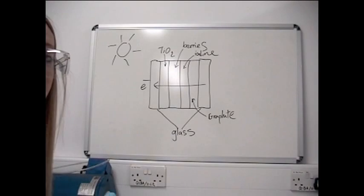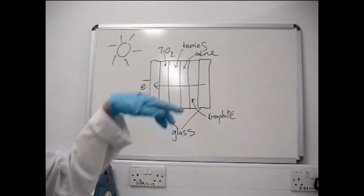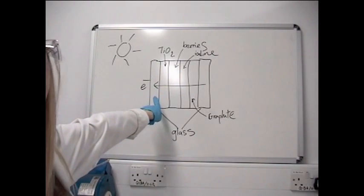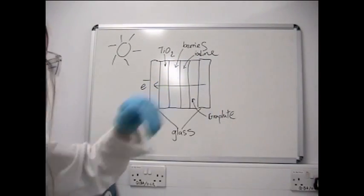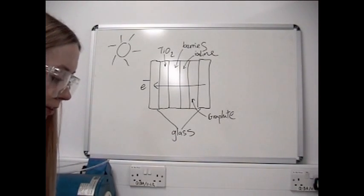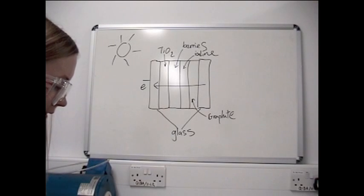So if we look back at our board, where we've shown what we're doing, we've now got this glass slide, we've got our titanium dioxide, and we've got our berry juice. So now we've just got the other half of this to make. So we're now going to put a drop of this iodine solution on top of our film of TiO2 and berries.